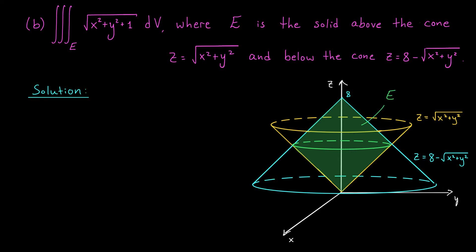Now that we have a visual of our solid, we're ready to pick a coordinate system. We could use spherical coordinates, but cylindrical coordinates will be more elegant here. The reason is that we see several instances of x squared plus y squared throughout the problem, which simplifies nicely to r squared in cylindrical coordinates. Additionally, our z values are nicely bounded between the two surfaces — the yellow cone gives the lower bound on z and the blue cone gives the upper bound. Projecting our solid E down into the xy plane will give a region with circular symmetry, which cylindrical coordinates handle very well.